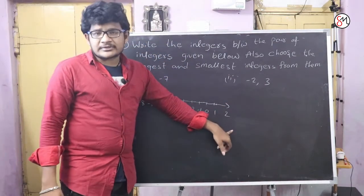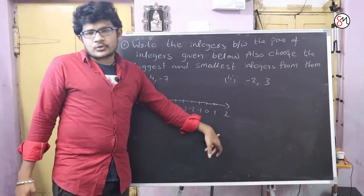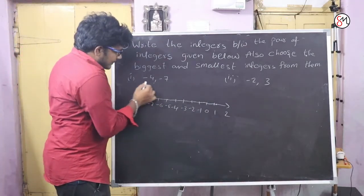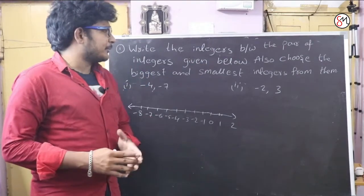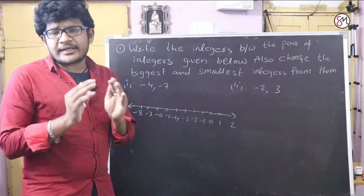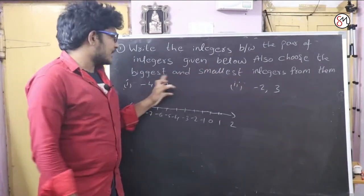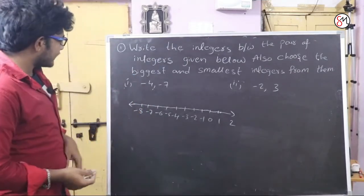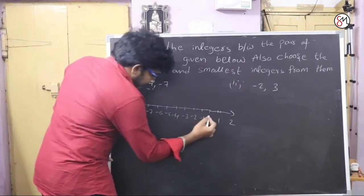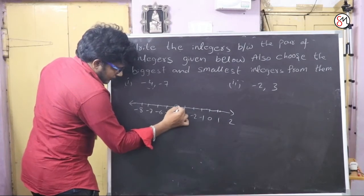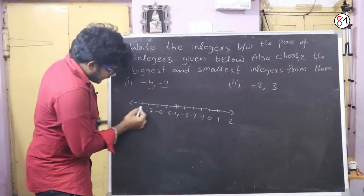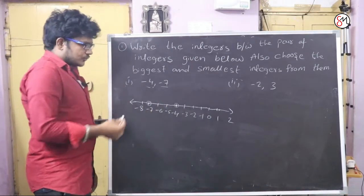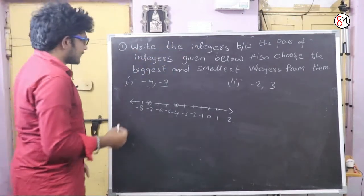Now we need to write the integers between the given pair of integers. The pair of integers is given below. If you choose two pairs of integers, you can see what integers are between them. Also, choose the biggest and smallest integers from those pairs.